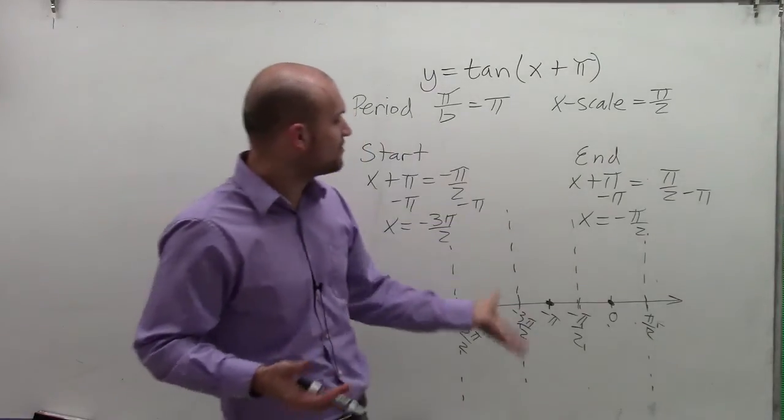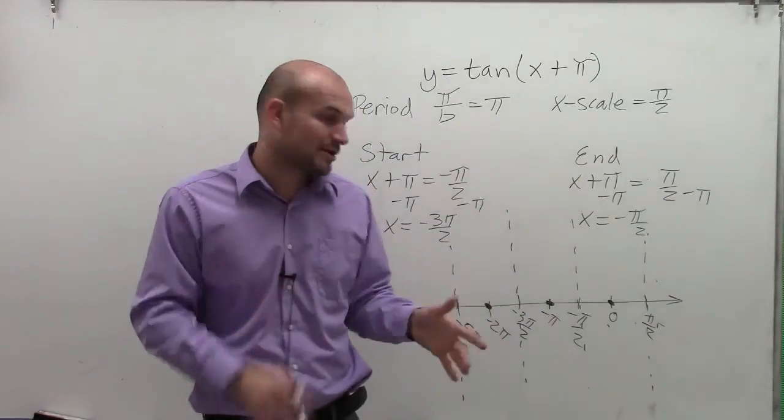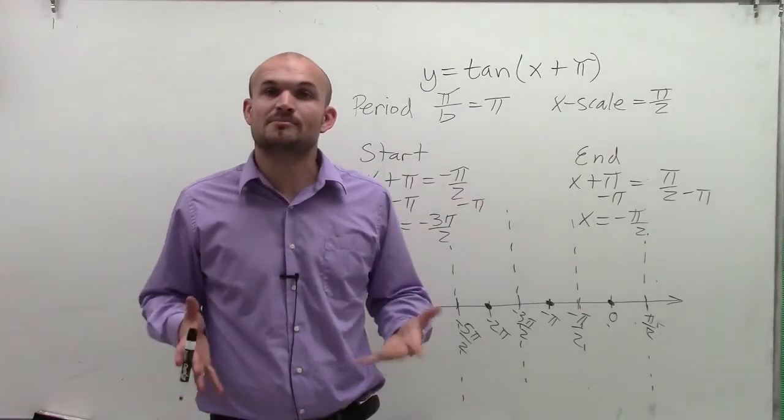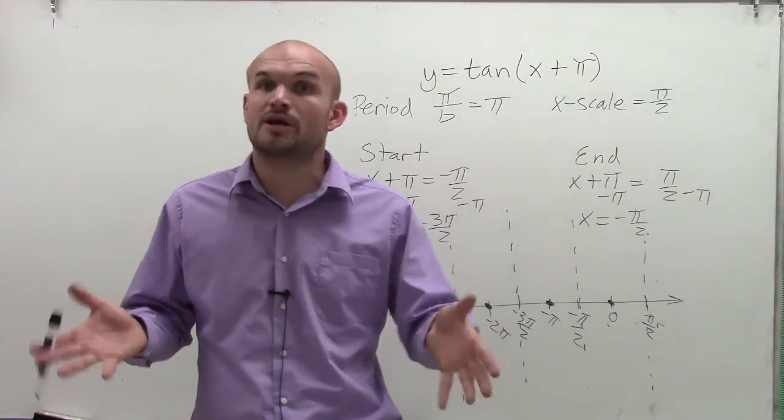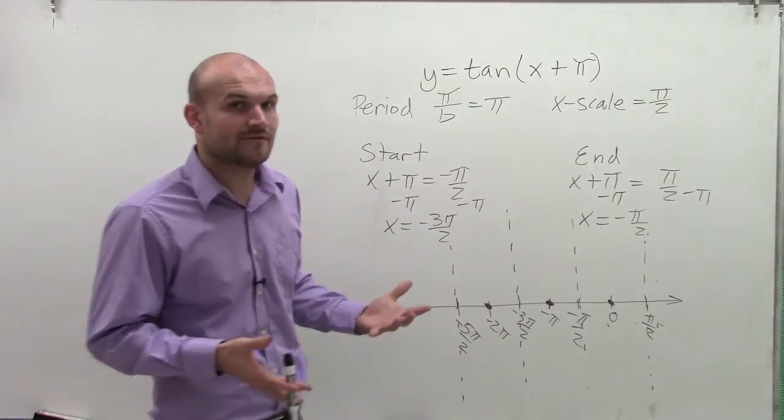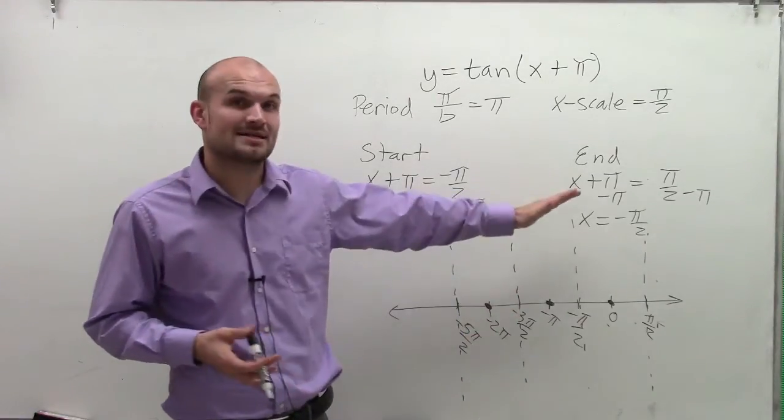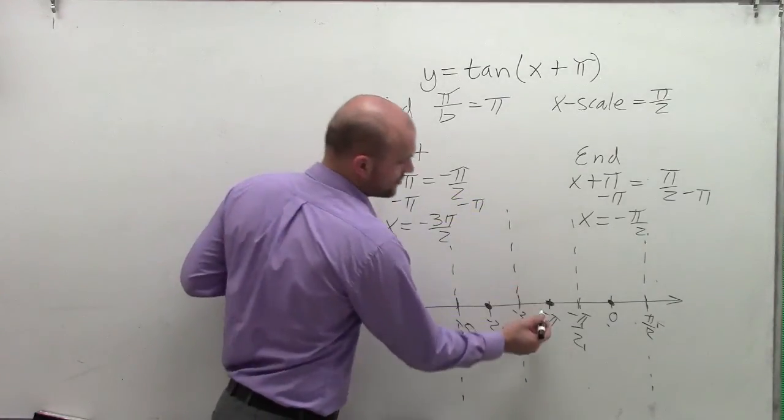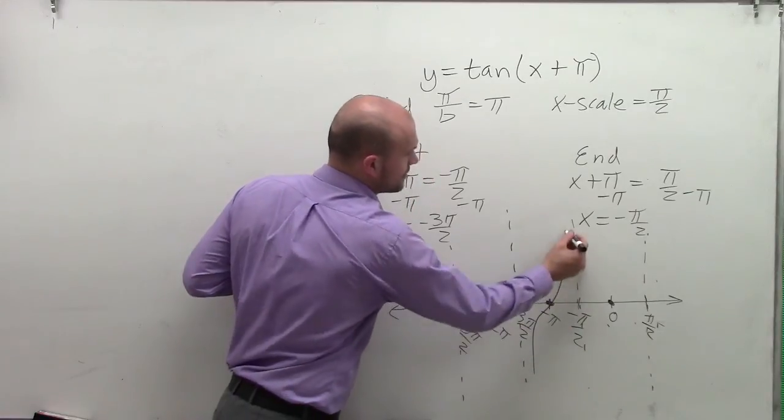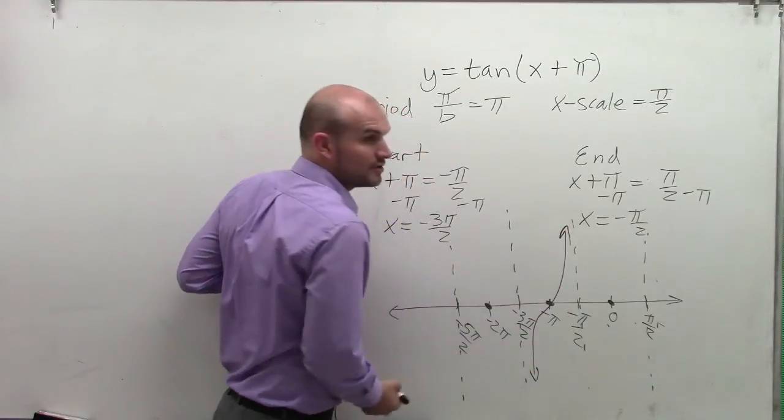So therefore I pretty much graphed my transformation. Now all I simply need to do is remember what does the parent graph of the tangent look like? The graph of the tangent falls down to the left and then rises to the right. So what I'm going to do through this point is graph one of those graphs. That's going to be your parent graph.